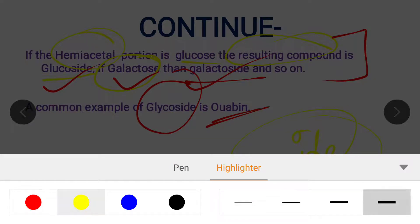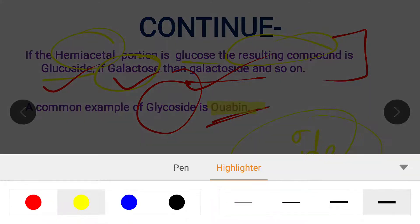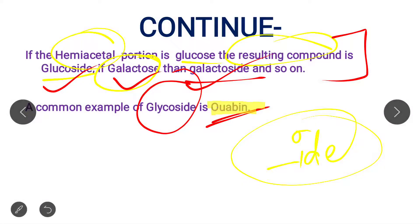A very common example of a glycoside is warfarin — I have highlighted this because it may come in the examination. If you are asked which of the following is an example of a glycoside, the answer will be warfarin.